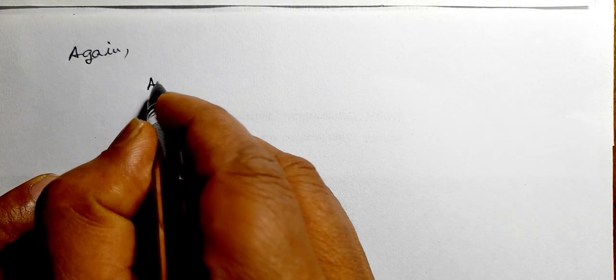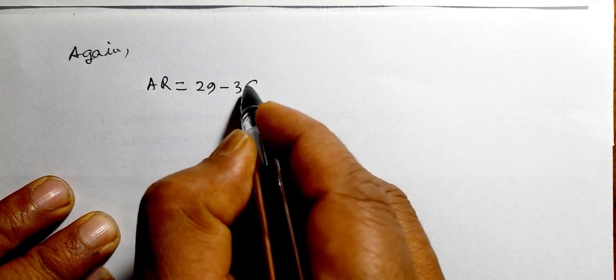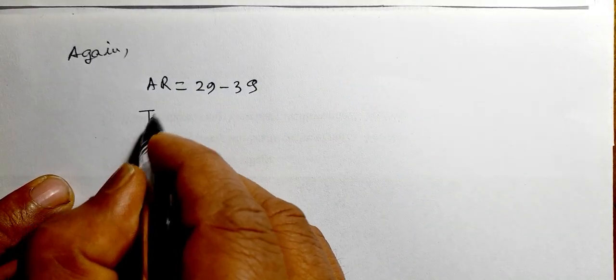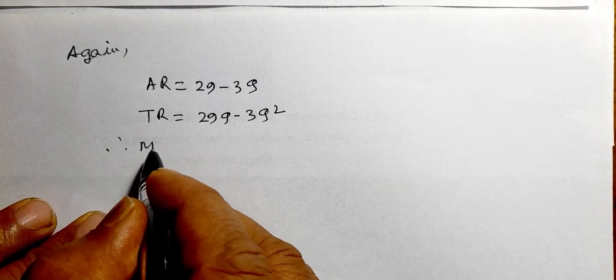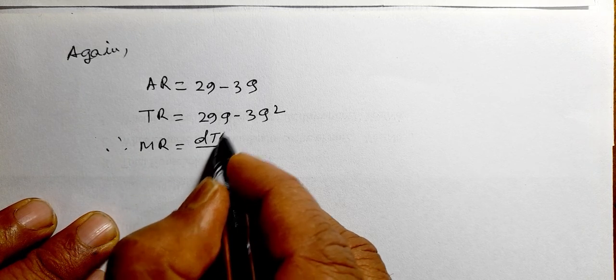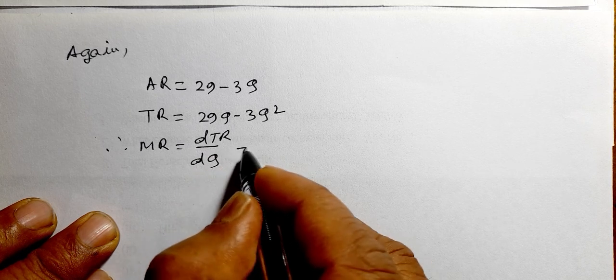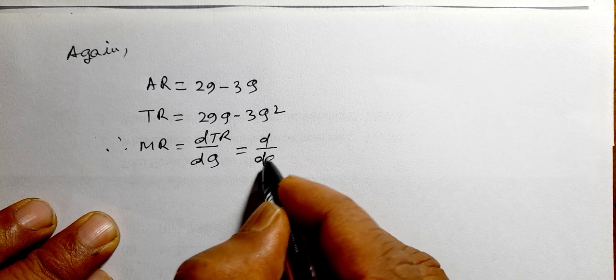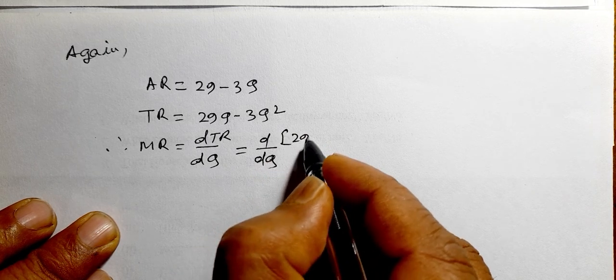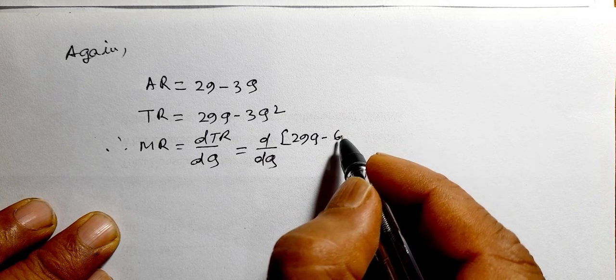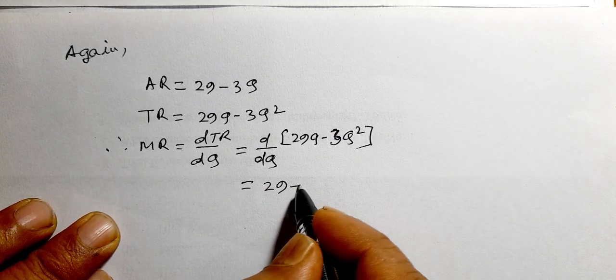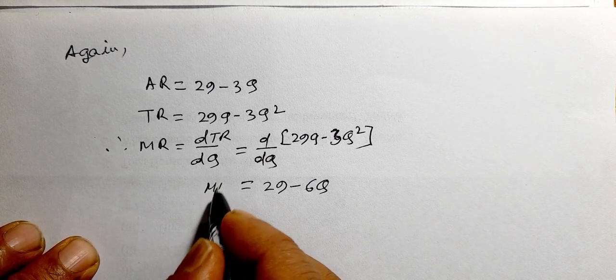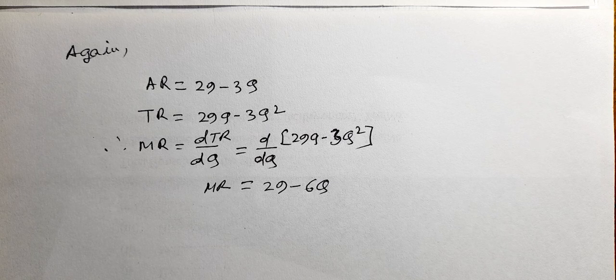Again, we have average revenue equal to 29 minus 3q and TR equal to 29q minus 2q². Therefore, marginal revenue is the derivative of total revenue with respect to output. That is d/dq of (29q minus 2q²). After differentiating, we get MR equal to 29 minus 6q.